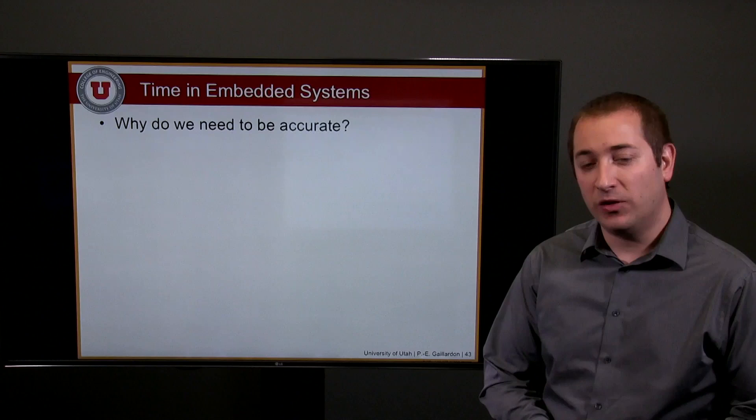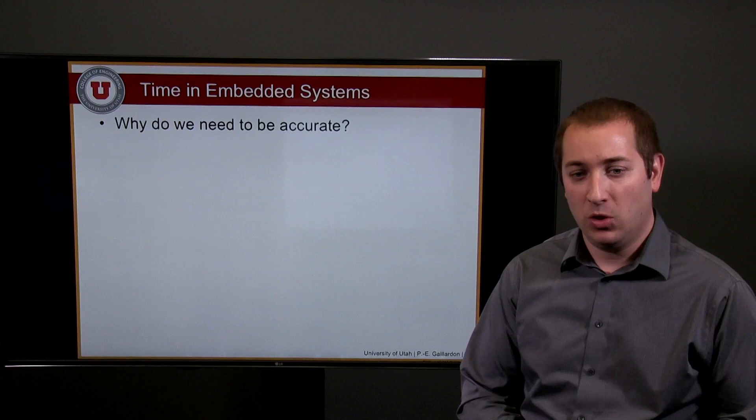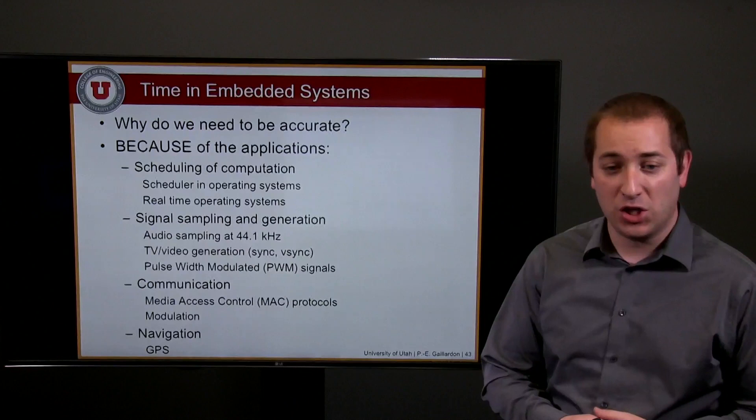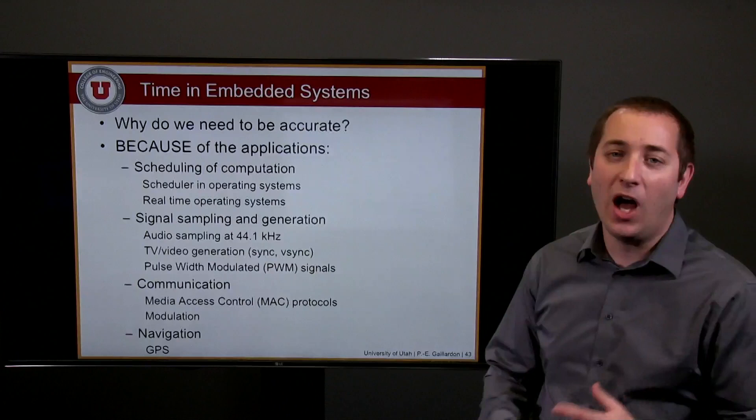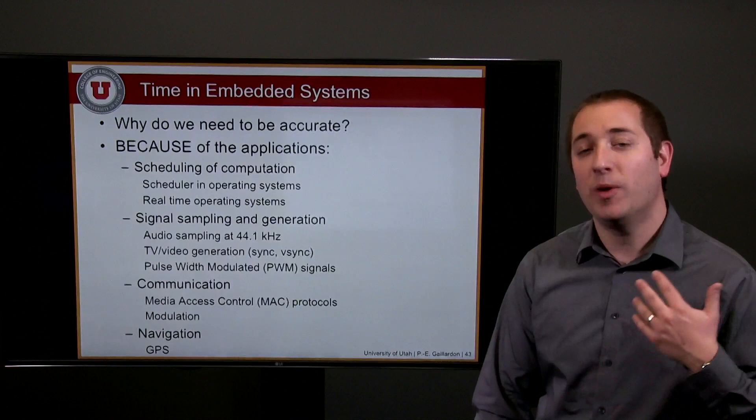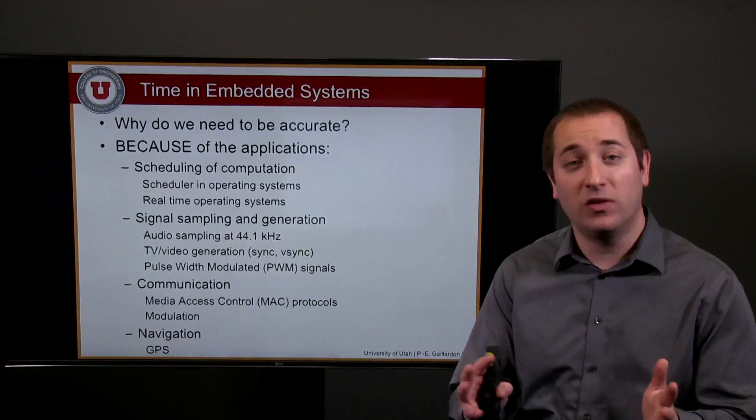Time in embedded systems is fundamental and we do need to be accurate in evaluating time because of many different applications. You might want to implement scheduling of computation and you want to make sure that you allocate accurately enough processing time to all your different tasks. You also might have real time constraints. You want to make sure that your system will react within the given boundary of time and need to evaluate this time or these next coming deadlines.